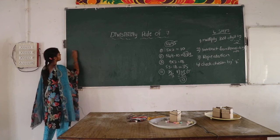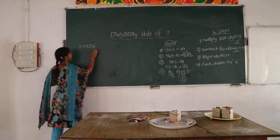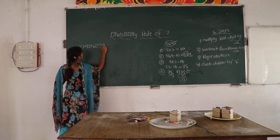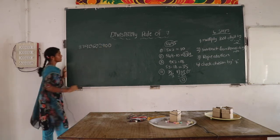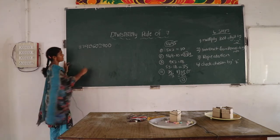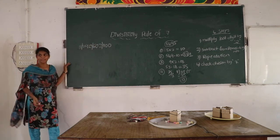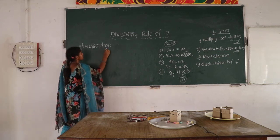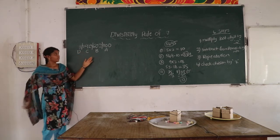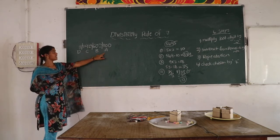Now I take a 10-digit number: 8790602290. In this method, first we divide this number into groups of 3 digits. Let us consider these groups as A, B, C, D.